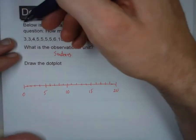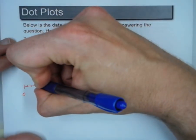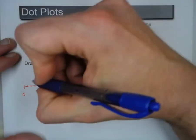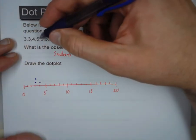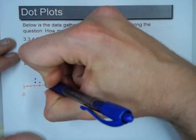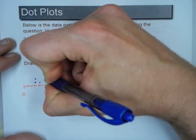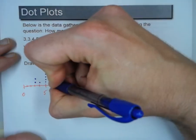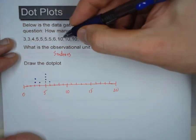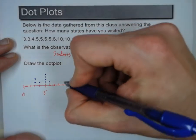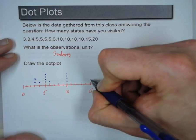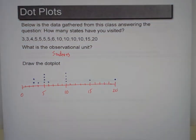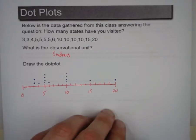So now, three occurs twice. So I'm going to put two dots above the three. Four occurs once, so one above the four. Five occurs one, two, three, four times, one, two, three, four. Six occurs once. Ten occurs one, two, three, four times. One, two, three, four. Fifteen occurs once, and twenty happens once. So there is our dot plot based on this data.